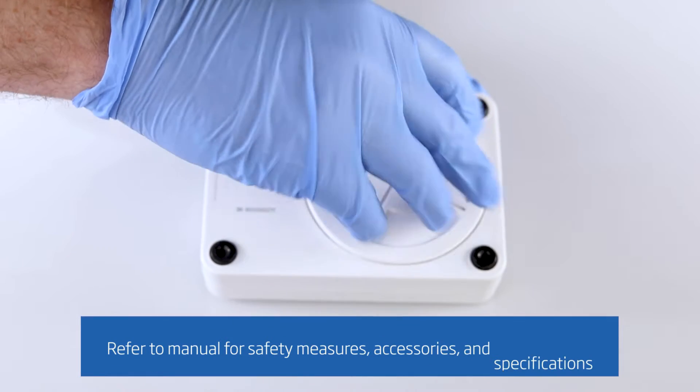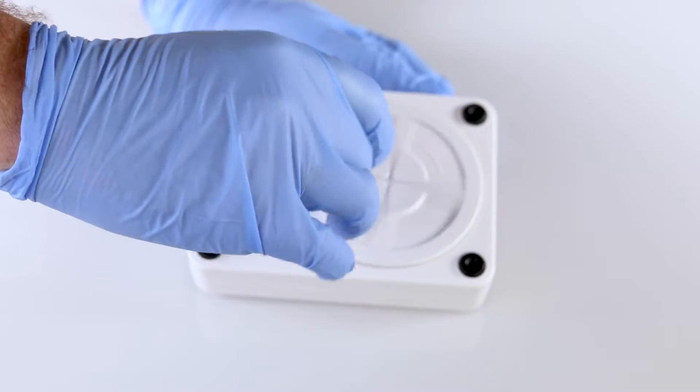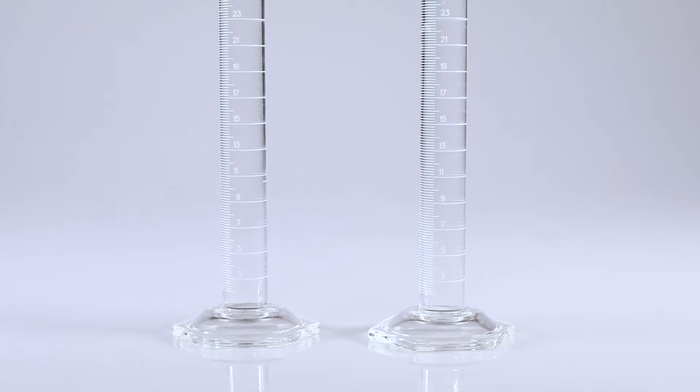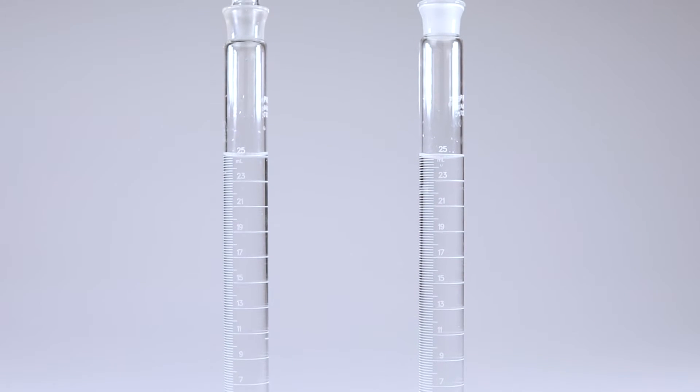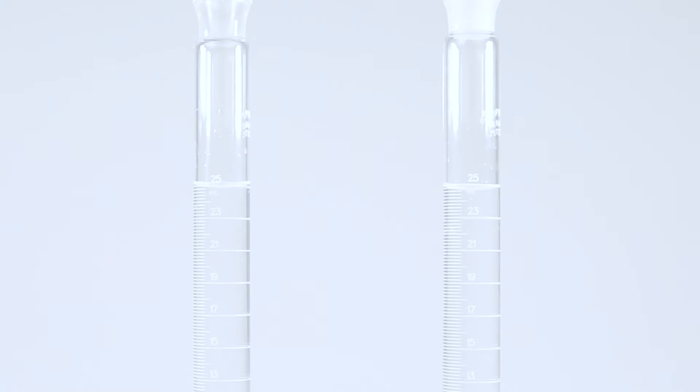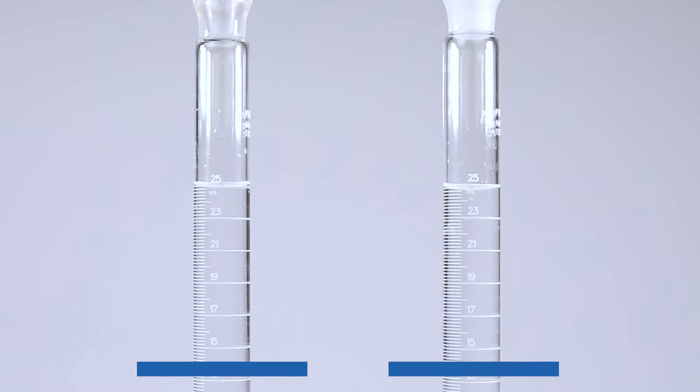When you first receive your photometer, install the batteries on the underside of your meter. Now you're ready to begin. Start by filling each of your graduated mixing cylinders to the 25 milliliter mark with the sample. It is good lab practice to label your cylinders number one and number two, or blank and sample, to ensure you are following the testing procedure correctly.